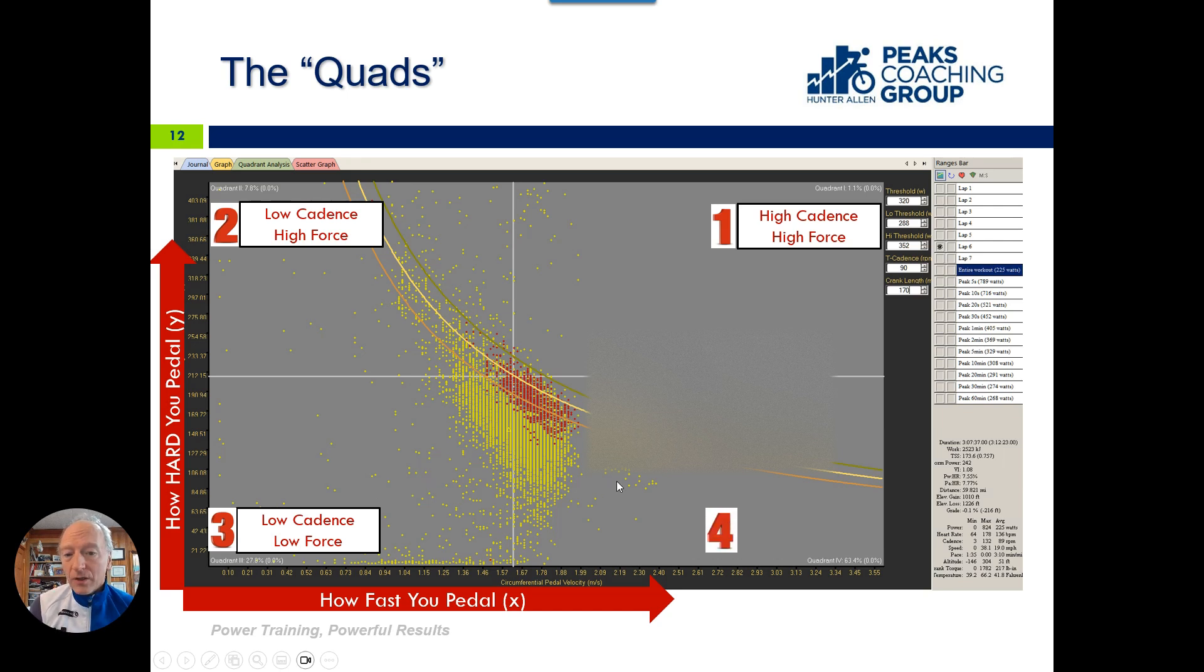Quadrant four is high cadence but not pedaling hard—pedaling fast but not hard. This is like being in a pace line. You're riding on that wheel and you have to stay on that wheel, constantly adapting. You need to keep your cadence over 90 RPM so you can adapt quickly. It's riding in a pace line, riding in a peloton, in a group. It's racing in a criterium. This is very normal to be in quadrant four in a criterium.